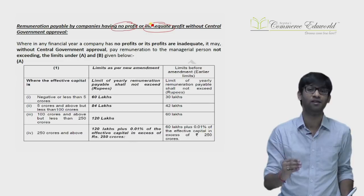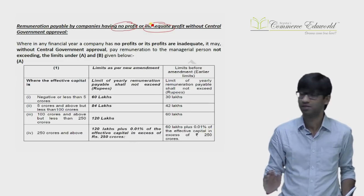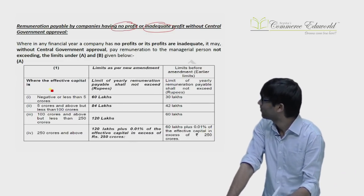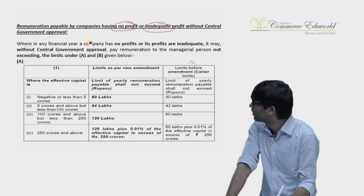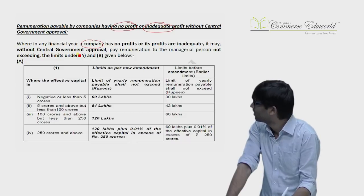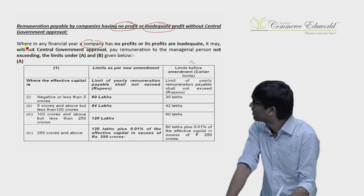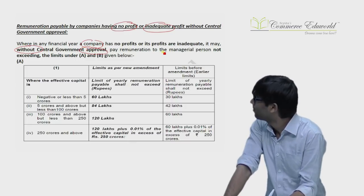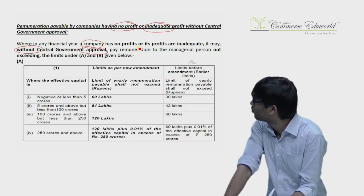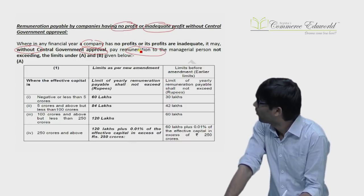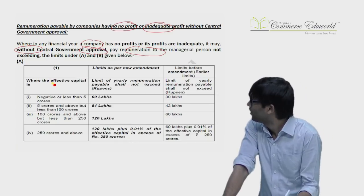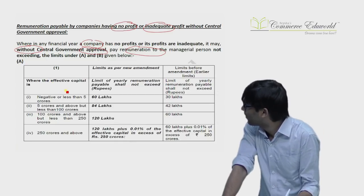The limits have been doubled from the earlier limits. If the company has no profit or inadequate profit, then without approval of the Central Government, they can pay manager's remuneration up to the following limits based on effective capital.